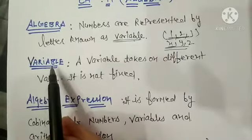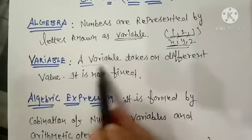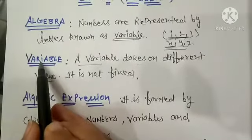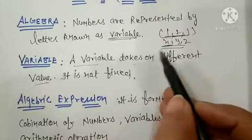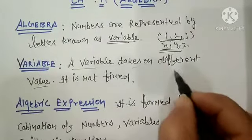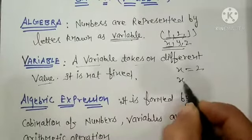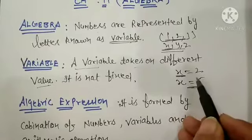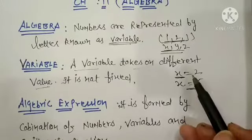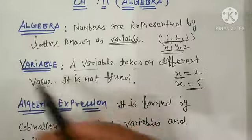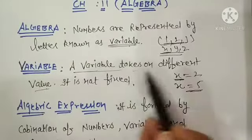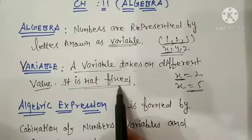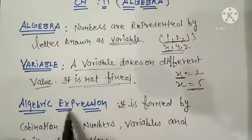First, we have a definition of variables. Variables take on different values. We know that variables vary in every equation. One question might have x equal to 2, another question might have x equal to 5 — so x is not fixed. One question will have 1, another 2, another 3. This is why it is called a variable — it takes on different values in different questions. It is not fixed.